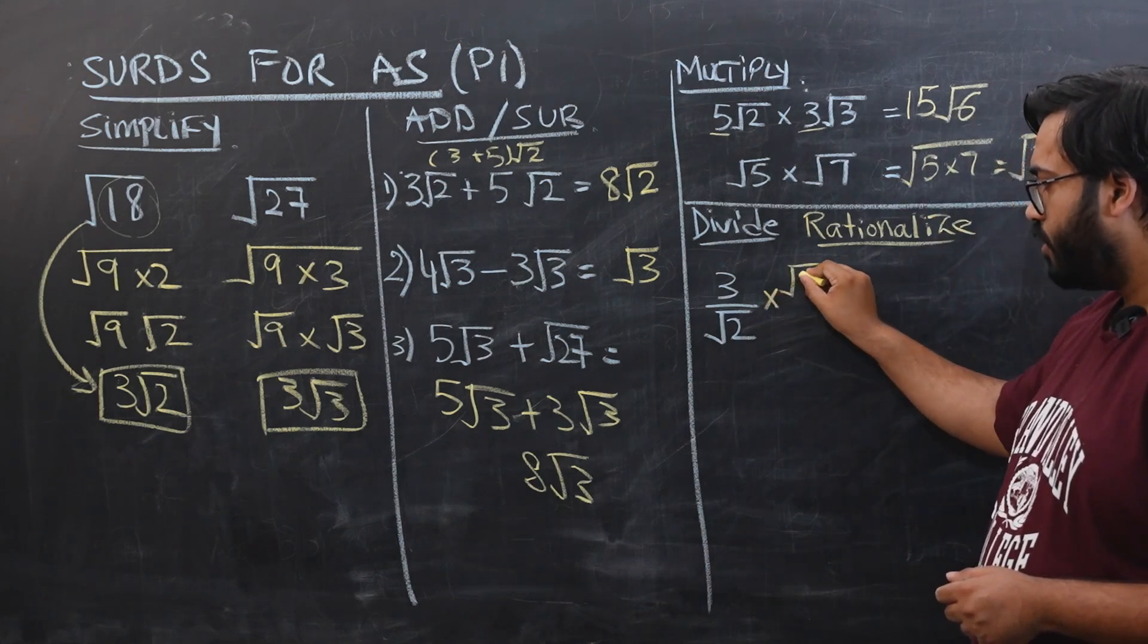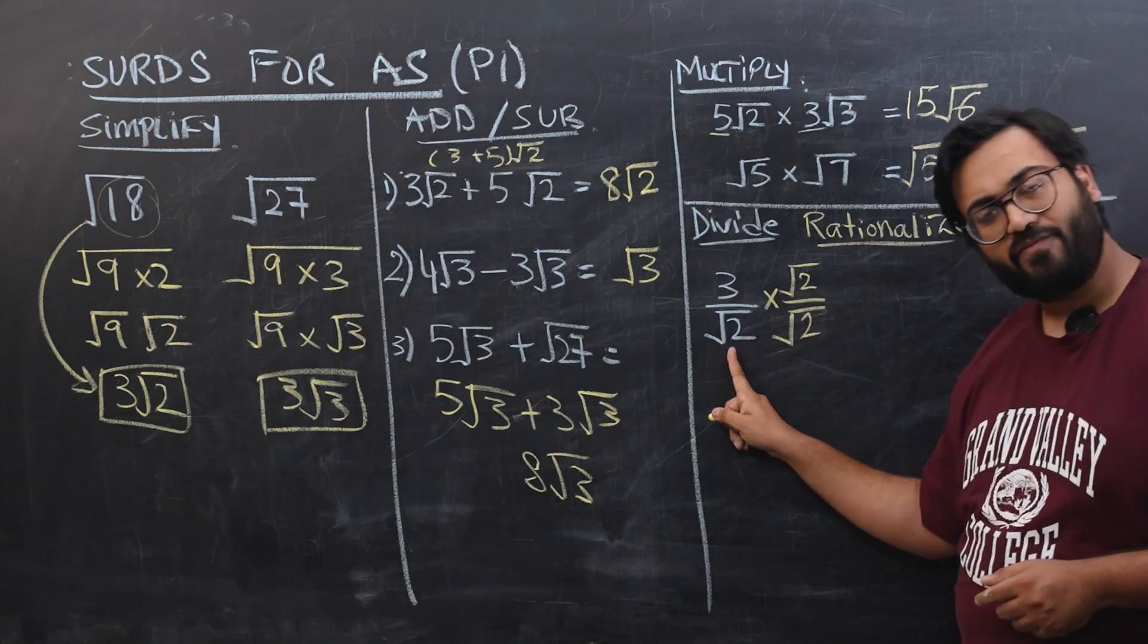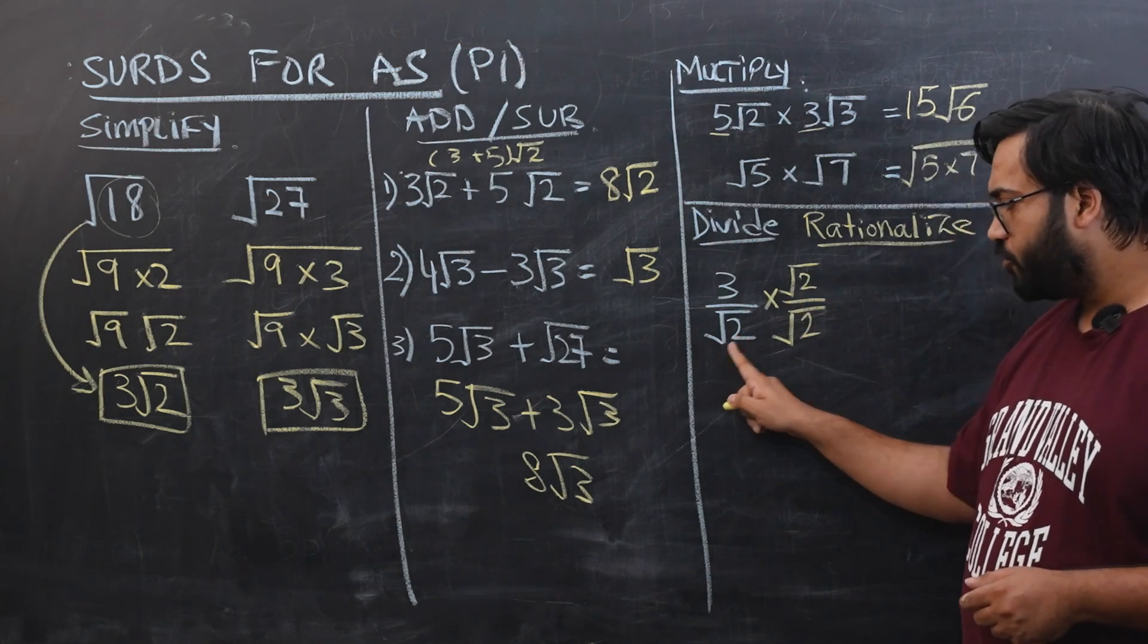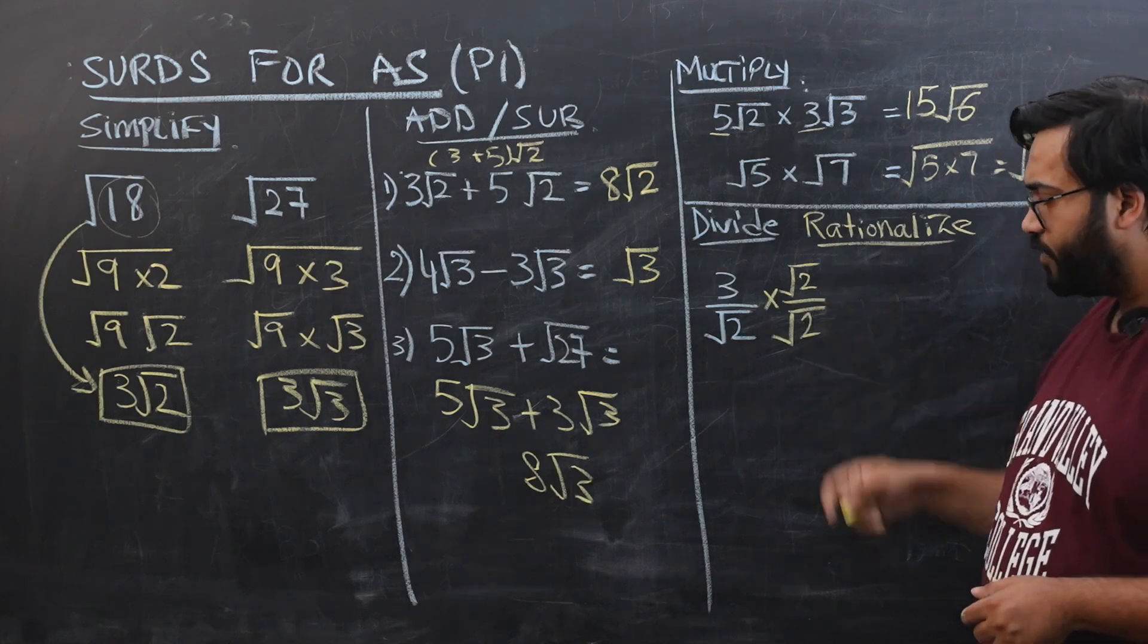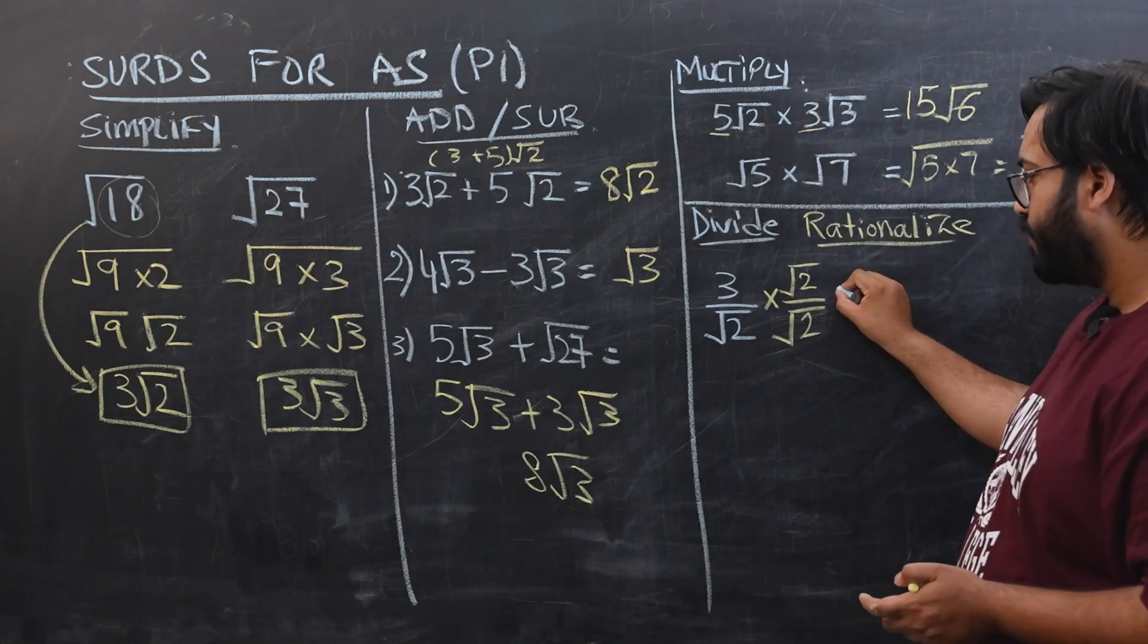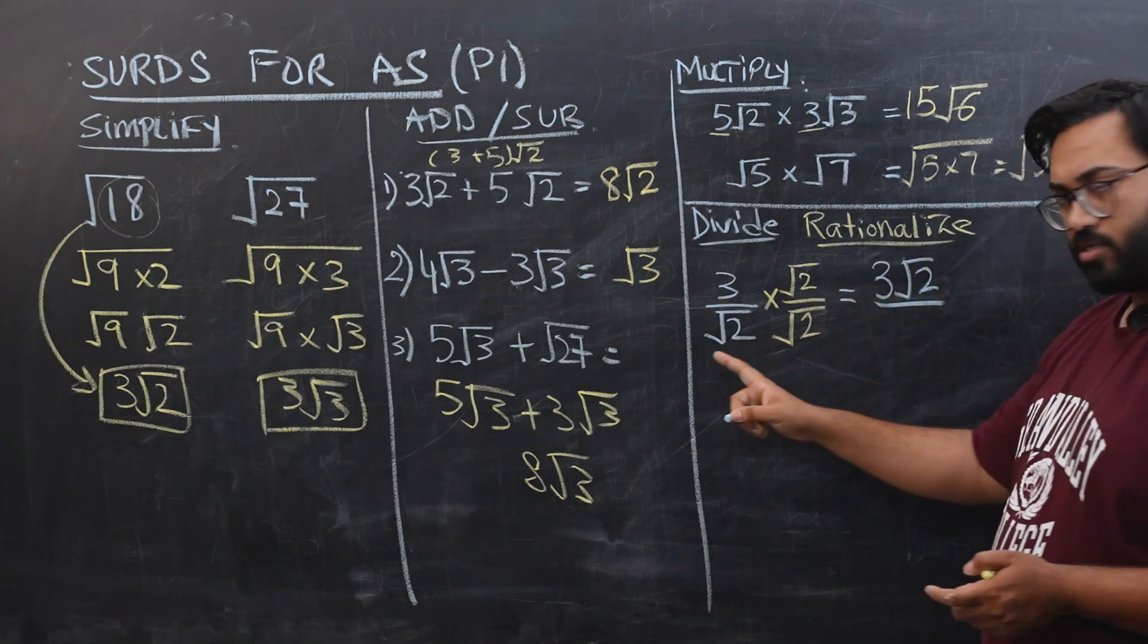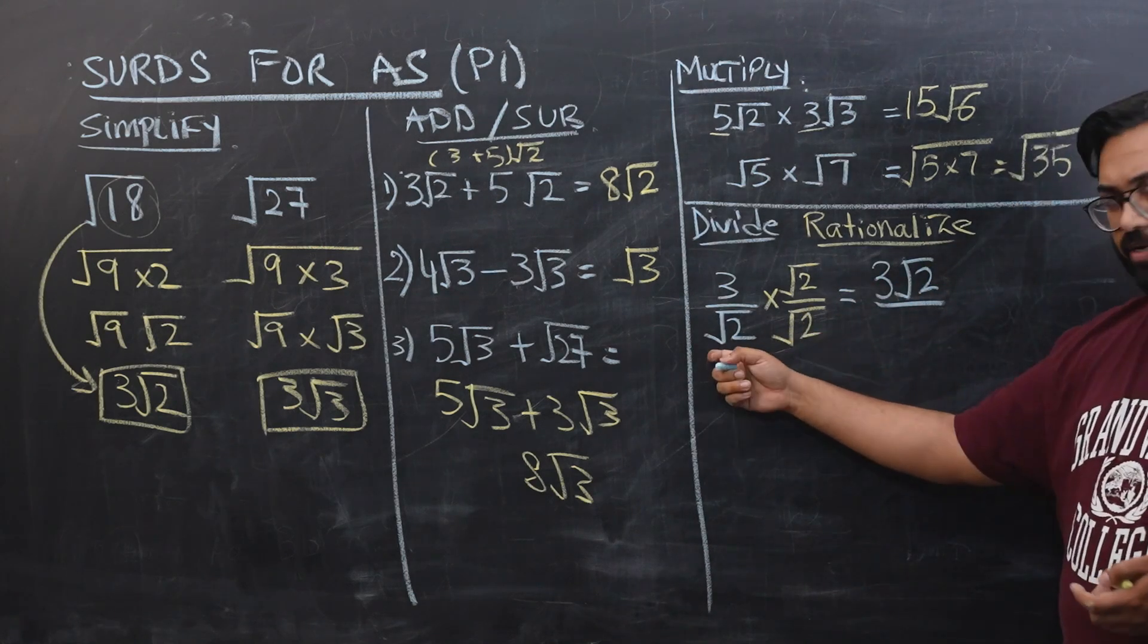If I want to remove this square root, I'm going to multiply with this square root 2 in the numerator and denominator. Now what would that achieve us is basically this will become 3 under root 2, and I just made you learn that square root 2 into square root 2 would become square root of 4.